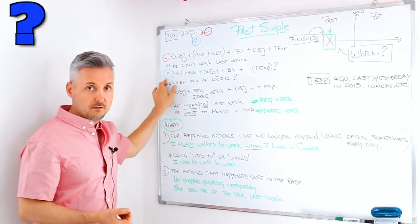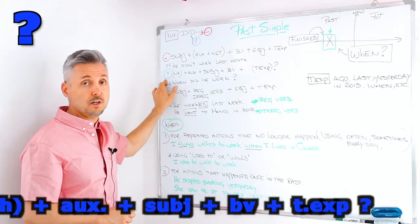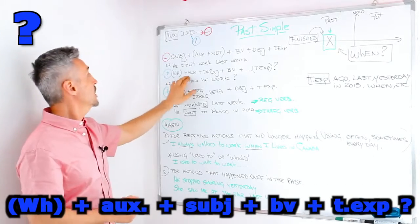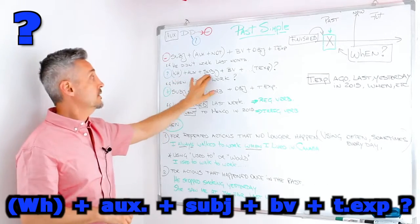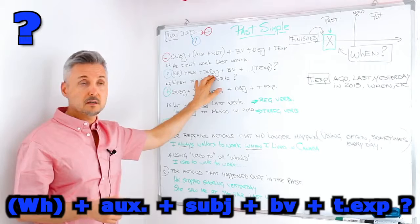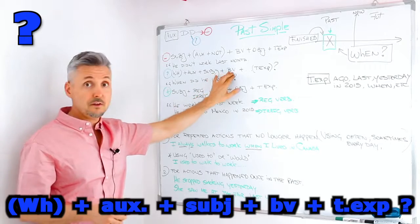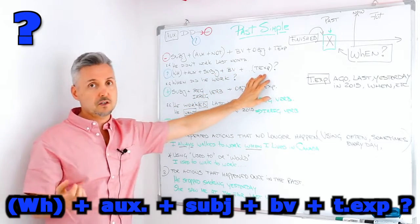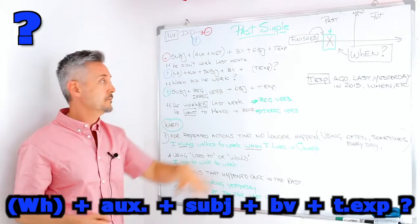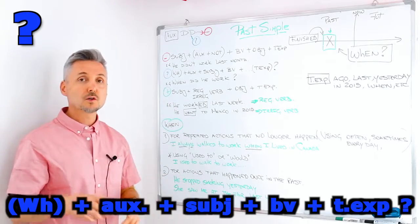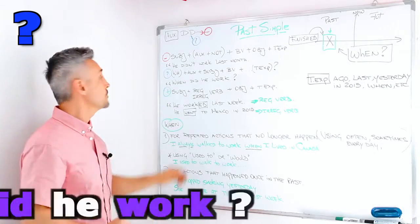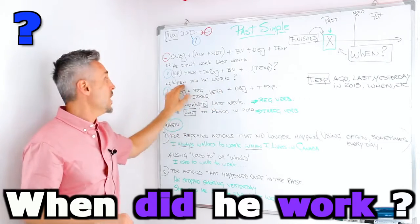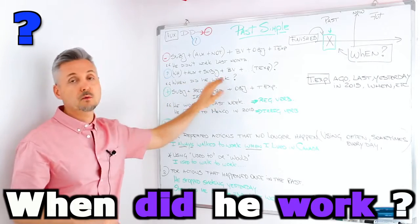For an interrogative sentence: WH question word if there is one, then the auxiliary, then the subject, then the base of the verb, and then the time expression if any. In this case I chose 'when': 'When did he work?'